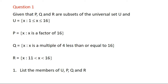So let's look at the question. Given that P, Q and R are subsets of the universal set U, and U is given by the set such that X is greater than or equal to 1 and X is less than or equal to 16. P is given by the set such that X is a factor of 16. Q is given by the set such that X is a multiple of 4 less than or equal to 16. And R is given by the set such that X is greater than 11 and X is less than 16.